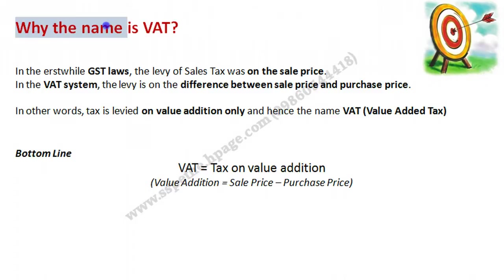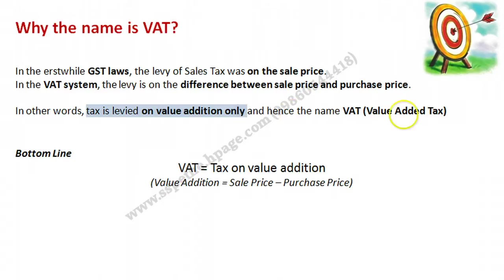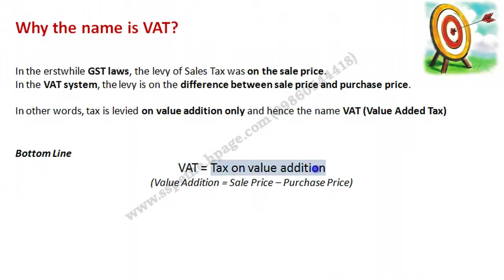Now the question is: why is the name VAT? In the erstwhile GST, the levy of sales tax was on the full sale price. But in the VAT system, tax will be levied only on the difference between the sale price and the purchase price — that is, on the value addition only. Hence the name Value-Added Tax. The bottom line is that VAT is a tax on value addition, and value addition means sale price minus purchase price.